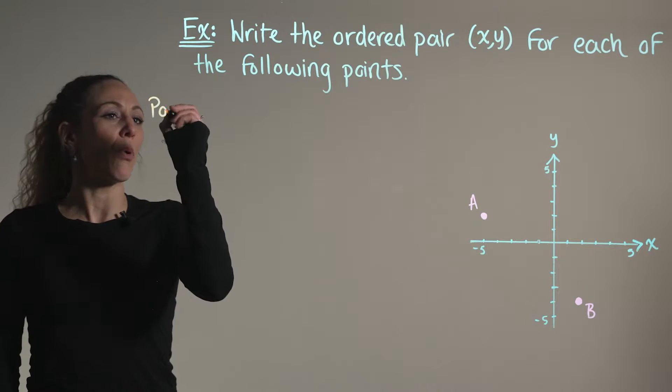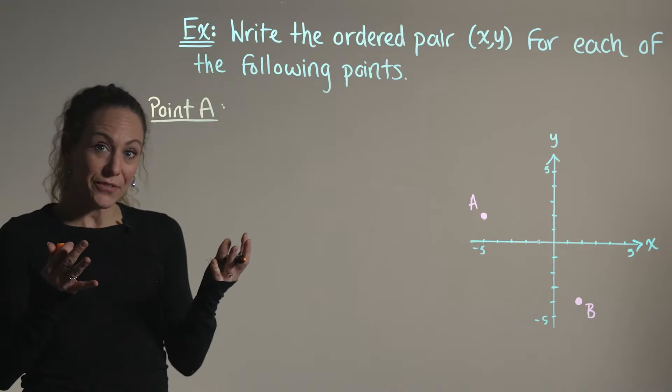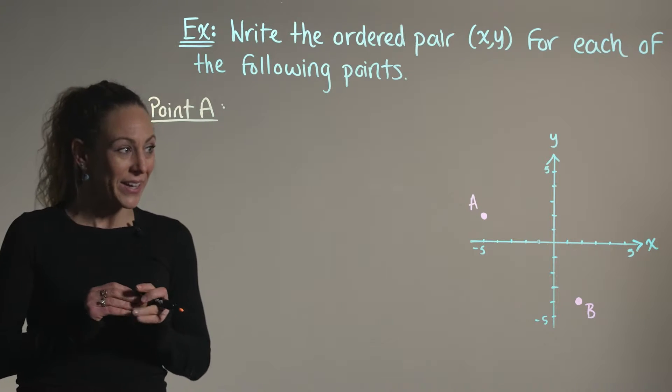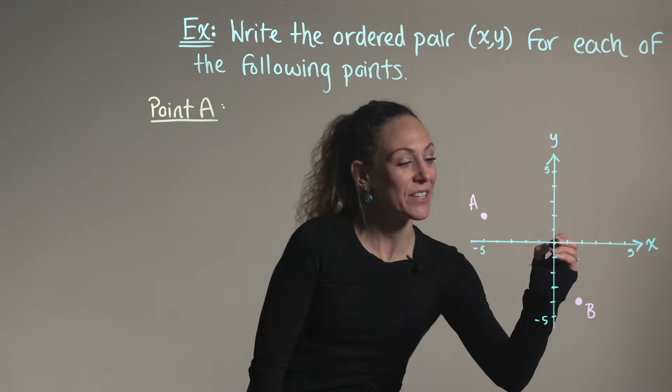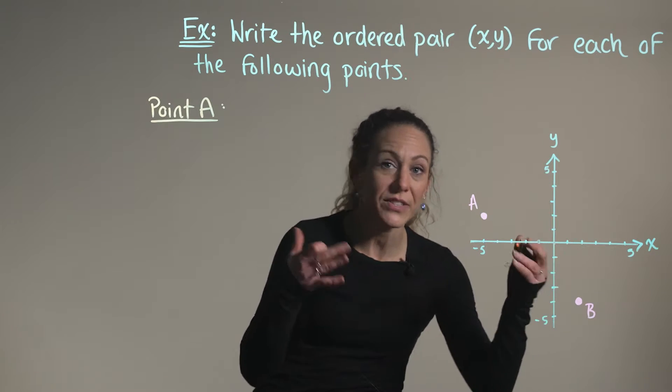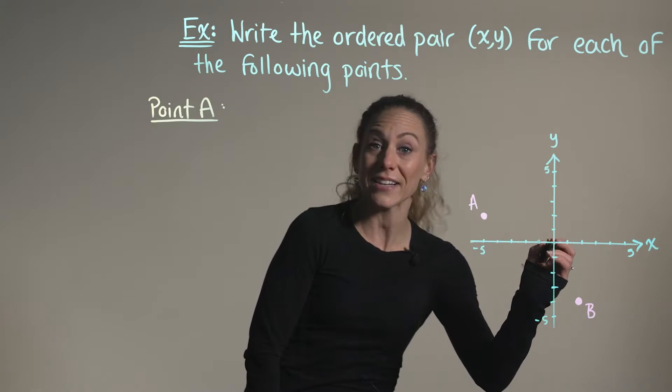Starting with point A. Anytime we're trying to identify the coordinates of an ordered pair, we want to begin by starting here at the origin. Beginning at the origin, we want to think to ourselves, how many units are we moving to the left or right on our x-axis?